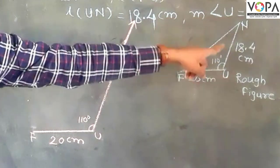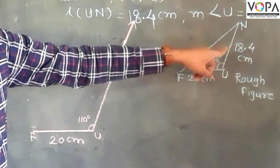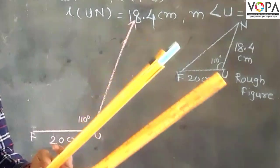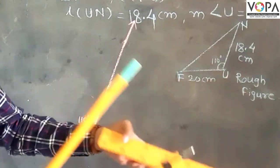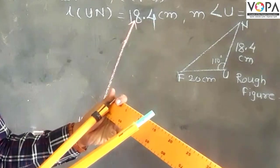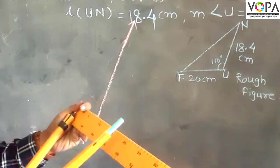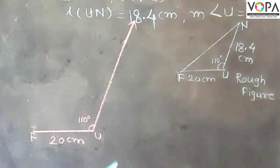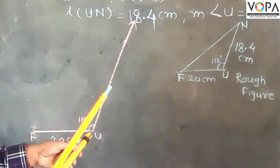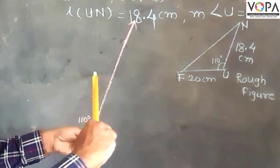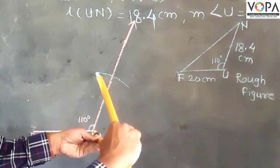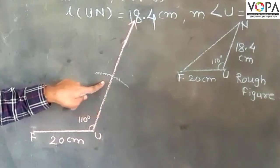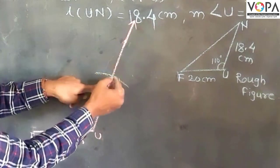UN is 18.4 centimeters. Take the distance in the compass, 18.4 centimeters. Put the needle on point zero, and here is 18.4. So put the needle on point U and take an arc where the arc intersects with the side.